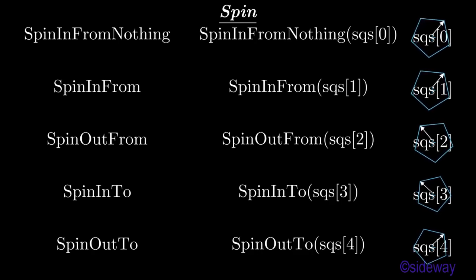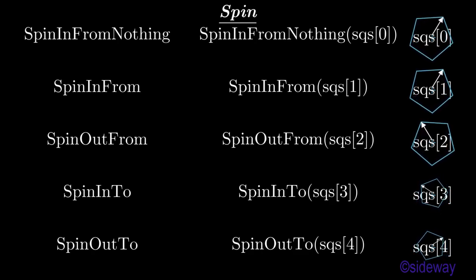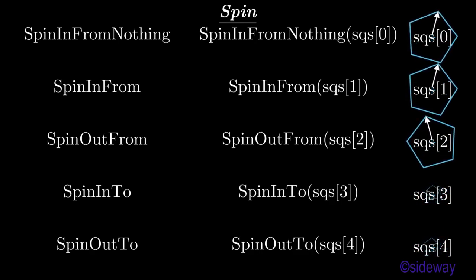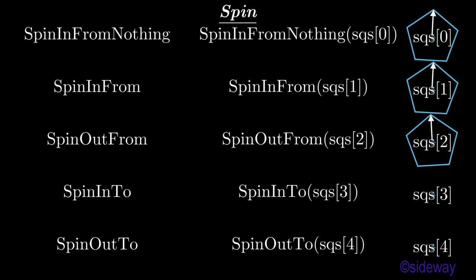SpinOutFrom method is used to grow a mathematical object at a point through a pie clockwise rotation animatedly. SpinInto method is used to diminish a mathematical object at a point through a pie counterclockwise rotation animatedly.